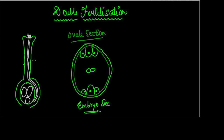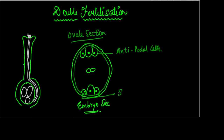Let us study the embryo sac in a bit of detail. The upper cells — the cells at the top — are called antipodal cells. They do not perform much of a role in double fertilization, so we won't go into much detail on them. The cells at the bottom — the two terminal cells only, not the middle one — are called the synergids.